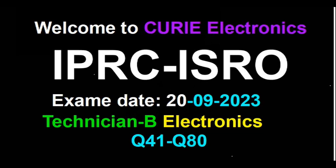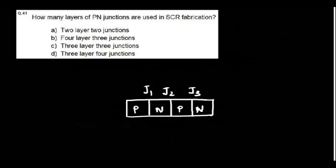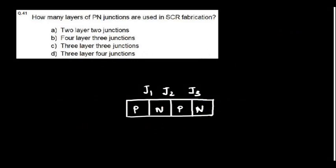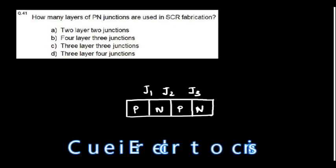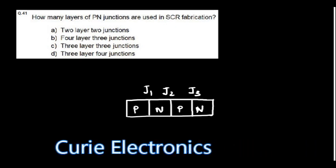How many layers of PN junctions are used in SCR fabrication? SCR is a PN-PN device, so it has got three junctions and four layers. The answer is four layers, three junctions.